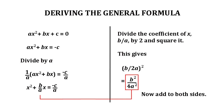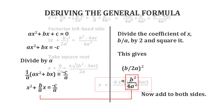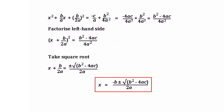Then we take the coefficient of x, which is b over a, divide it by 2 and square it. So we have b over a all over 2, squared, equals b squared over 4a squared. And now we add this to both sides of the equation to complete the square. What we get is x squared plus b over a times x plus b over 2a all squared, equals minus c over a plus b squared over 4a squared.